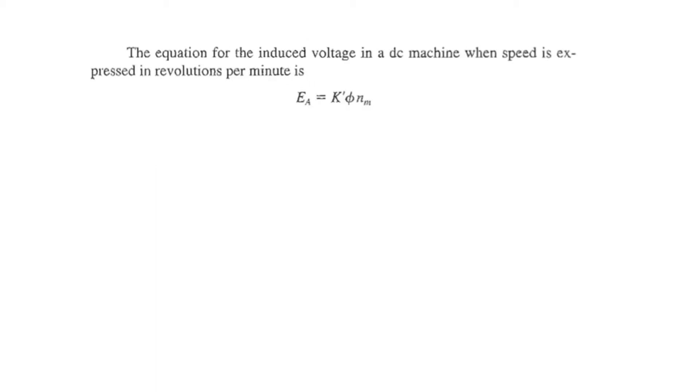Now let's see some of the basics. The equation for the induced voltage in a DC machine when speed is expressed in revolutions per minute is given by this formula. Ea is the induced voltage, k is some constant, phi is the flux, and Nm is the revolution per minute.